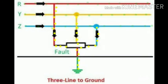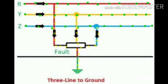Here in the picture, we see the three-line-to-ground fault — all three phases are connected to the ground. This type of fault is called the three-phase three-line-to-ground fault, and it is an example of a symmetrical fault.